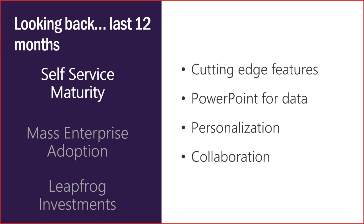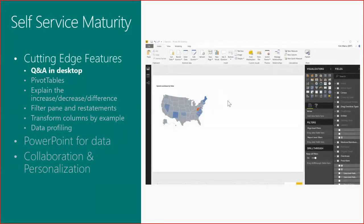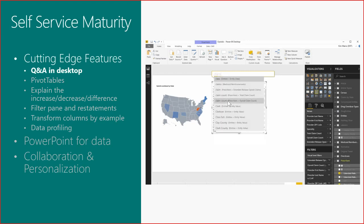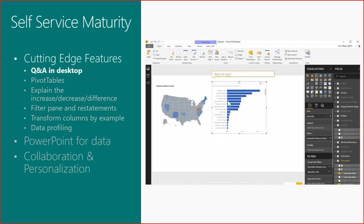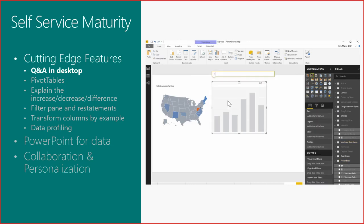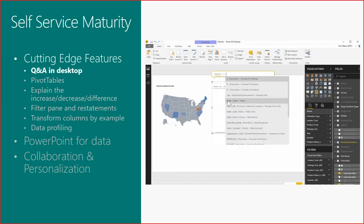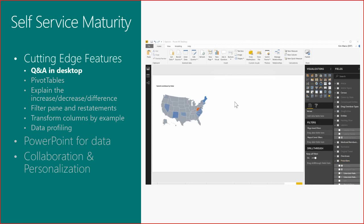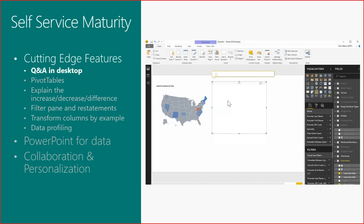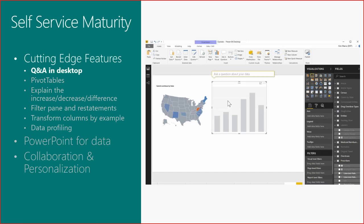Over the last year, we went beyond that catch-up mode and invested in cutting-edge features to morph the product into what we call the PowerPoint for data. Big investment in personalization, big investment in collaboration. One of the key things is natural language — the ability to just type what you want, such as 'show me claims by specialty,' and immediately get it on screen. You don't need to know how to write a query or navigate fields.